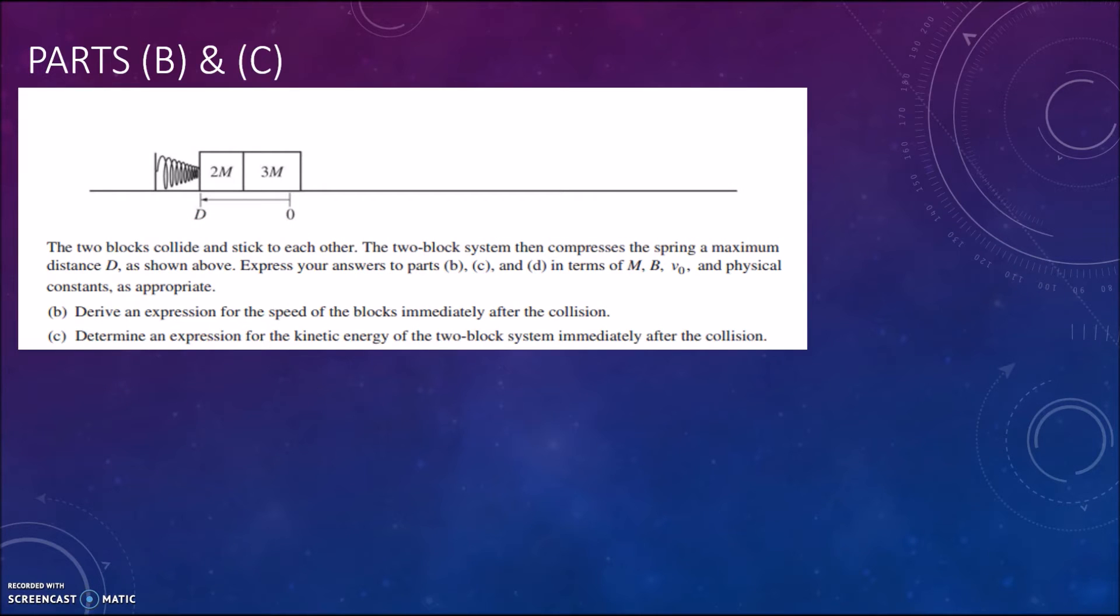So the next part asks you to derive an expression for the speed of the blocks immediately after the collision. So what we're going to do is use conservation of linear momentum for this. As we know the first block was at rest, the block of mass 2m, and the second block of mass 3m was moving with the initial velocity. So we can set up this equation right here.